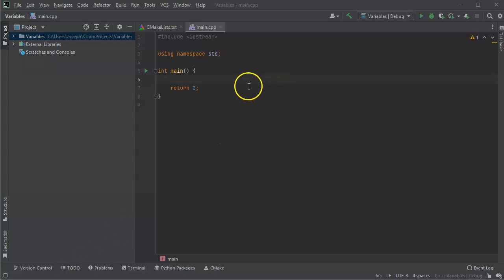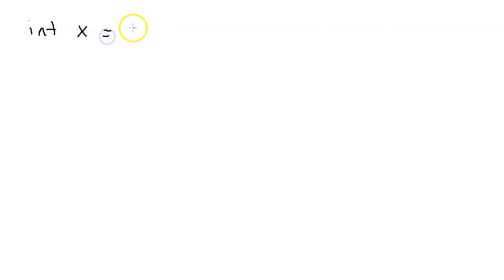Let's talk about variables and values. Here we have a basic C++ program and I want to use variables, but what are variables really? Well, if we have a variable, let's say x, we can define it as int x equals one. What that does is it creates a variable x and then assigns the value of one, so you might have an x which is really pointing to a location in memory.